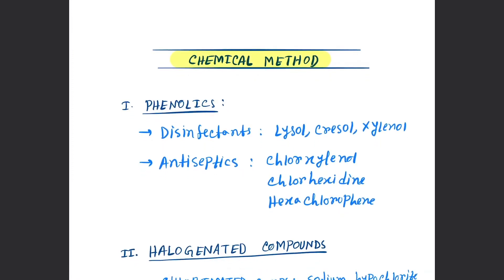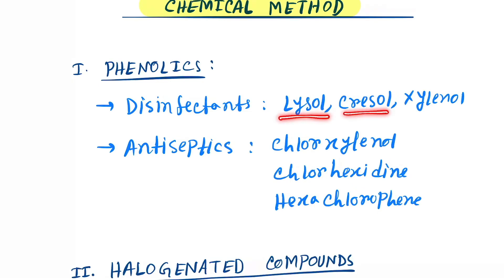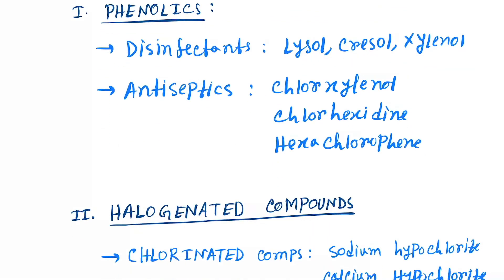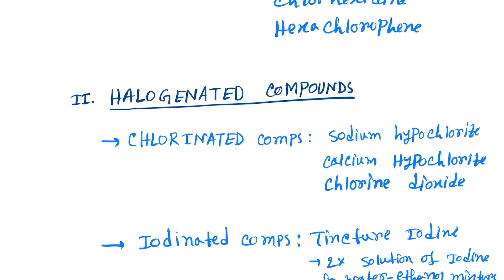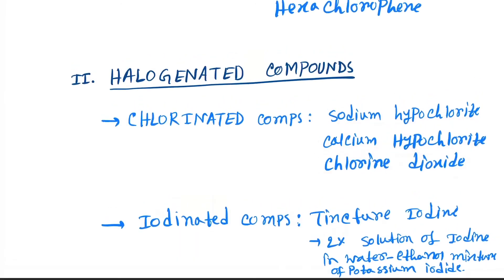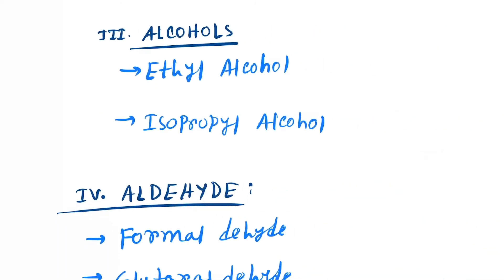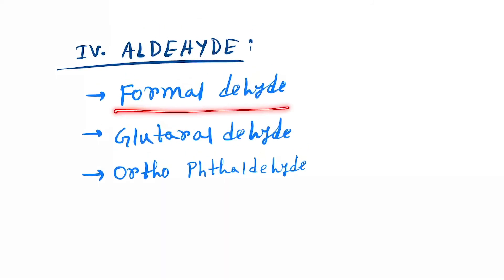Next is chemical methods. First is phenolics: disinfectants like Lysol, cresol, and xylenol, and antiseptics like chloroxylenol, chlorhexidine, and hexachlorophene. Next is halogenated compounds: chlorinated compounds like sodium hypochlorite, calcium hypochlorite, and chlorine dioxide, and iodinated compounds like tincture iodine. Next is alcohols: ethyl alcohol and isopropyl alcohol. Aldehydes: formaldehyde, glutaraldehyde, and orthophthalaldehyde.